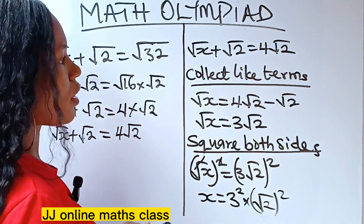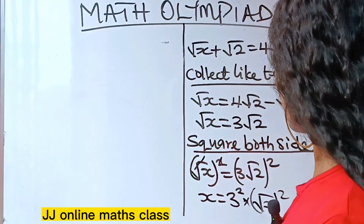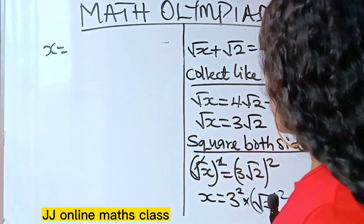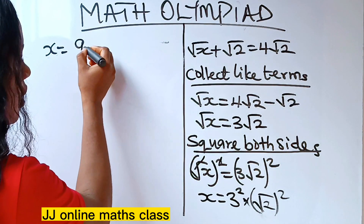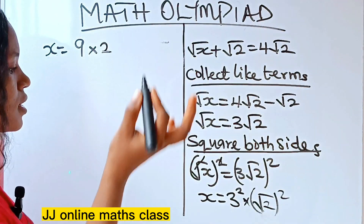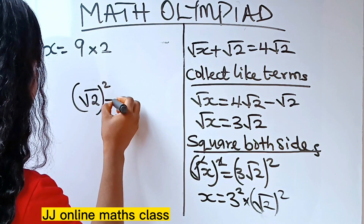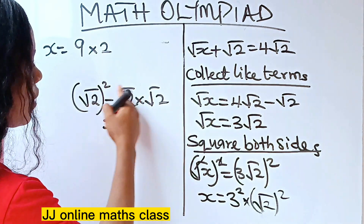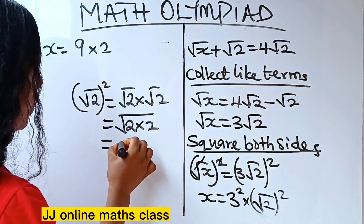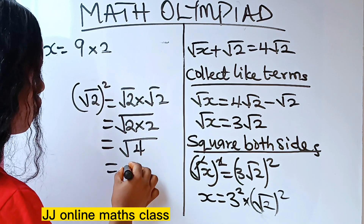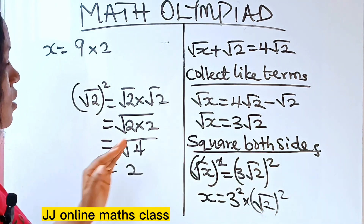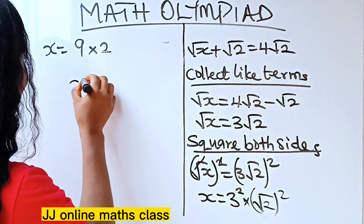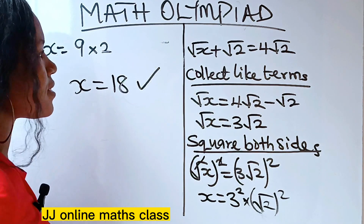So x equals 3 squared times root 2 squared. Now, 3 squared is 9. Root 2 squared is root 2 times root 2, which equals root 4, and square root of 4 is 2. So we have 9 times 2, which means x equals 18. That is our answer.